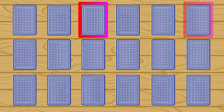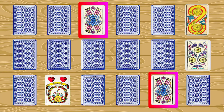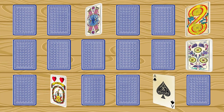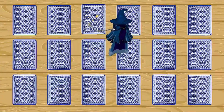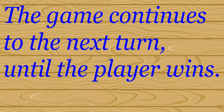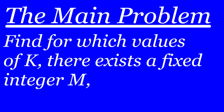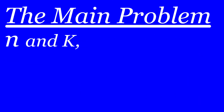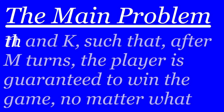At the second turn, the player chooses another K cards, and again if any of these cards have the same symbol, then the player wins the game. Otherwise, these cards are faced down, then the evil wizard shuffles them and returns them to their original K locations. The game continues in this way until the player chooses K cards with some matching symbols and wins the game.